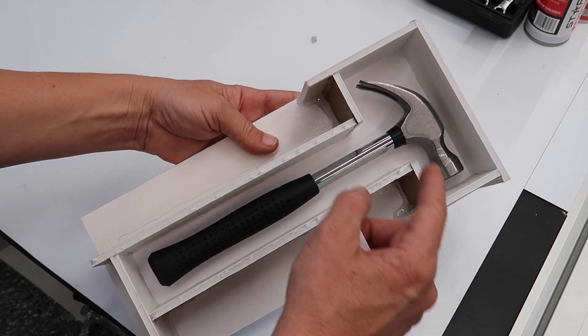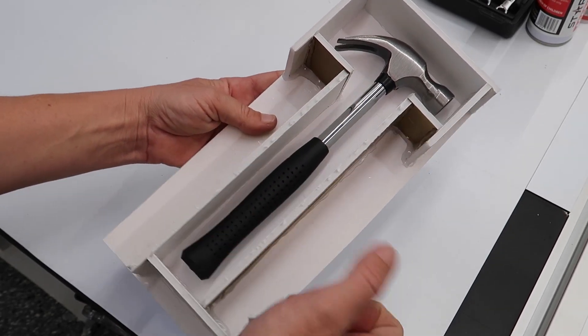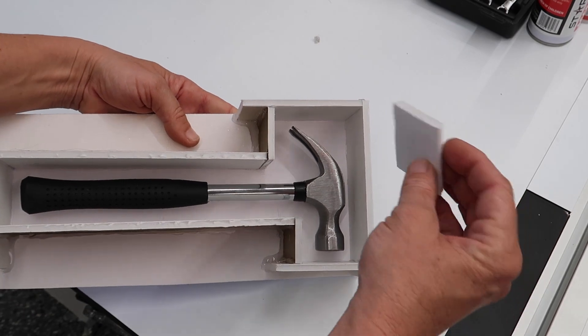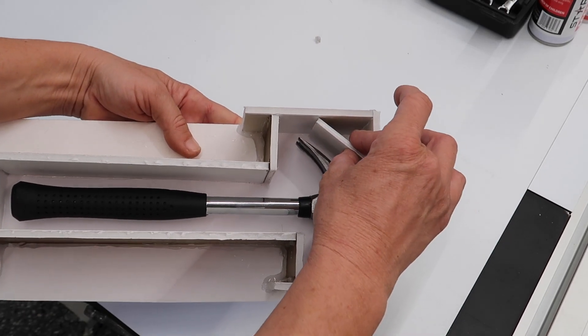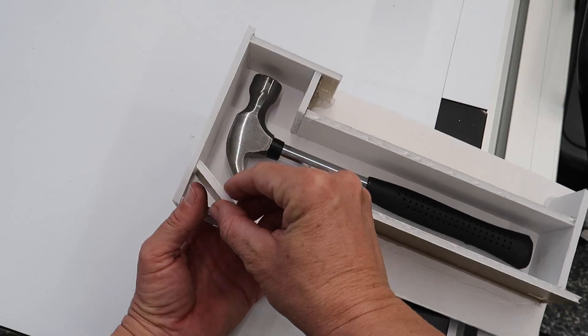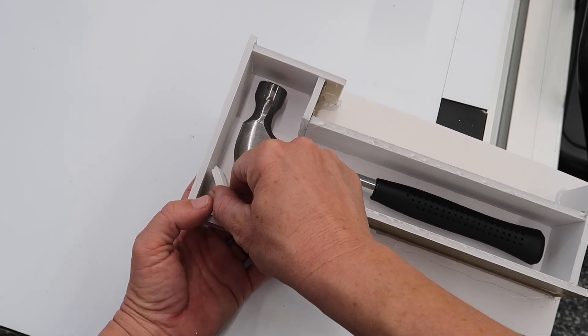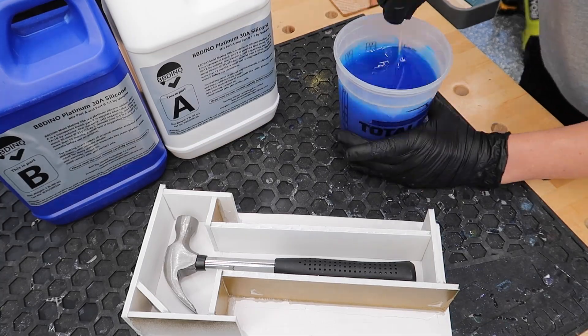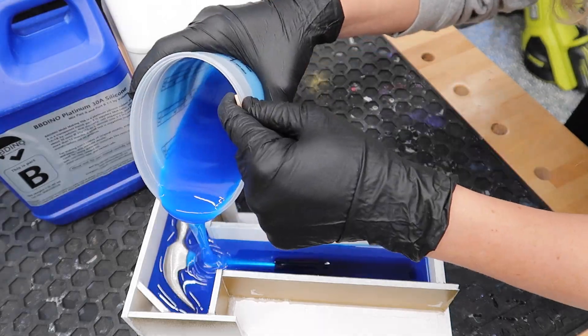Okay, first mold made. I did something different this time where instead of making a full box with all this wasted space and wasted material, I'm also even thinking about putting in a piece right here so that I'm just using the least amount of silicone needed for making this mold.